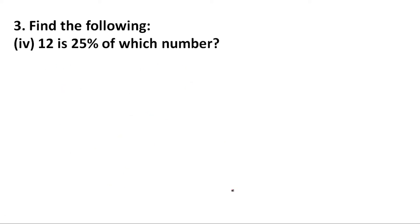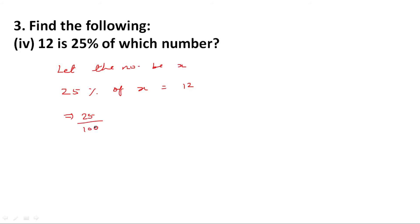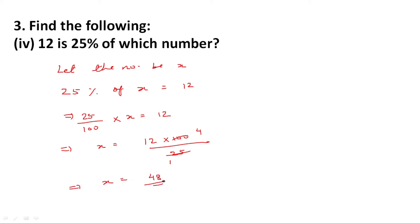Next question: find the following — 12 is 25% of which number? Let the number be x. From the question, 25% of x is equal to 12. This implies 25 upon 100 multiplied by x is equal to 12. This implies x is equal to 12 multiplied by 100 divided by 25, giving x equal to 48. Therefore 12 is 25% of number 48.